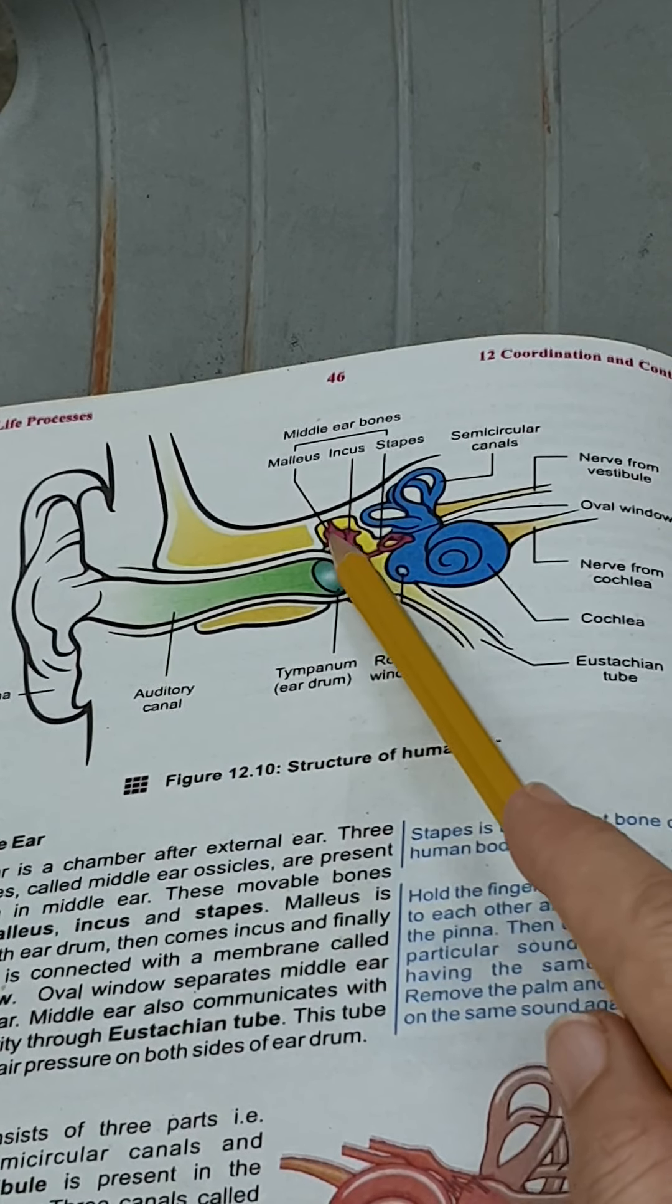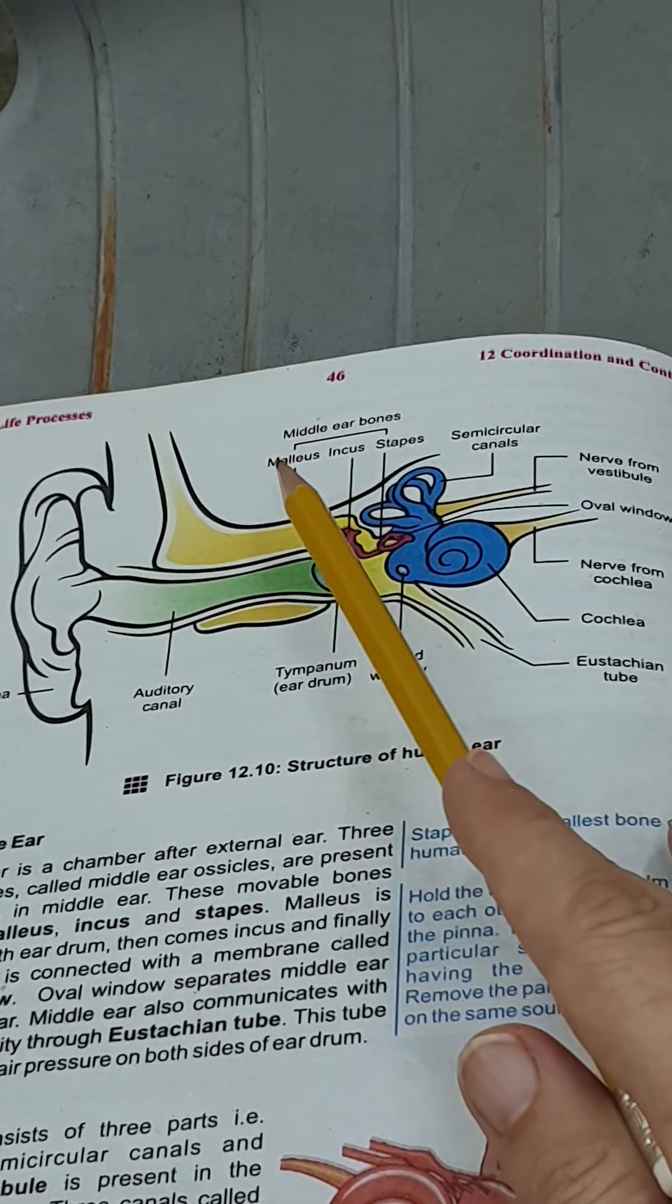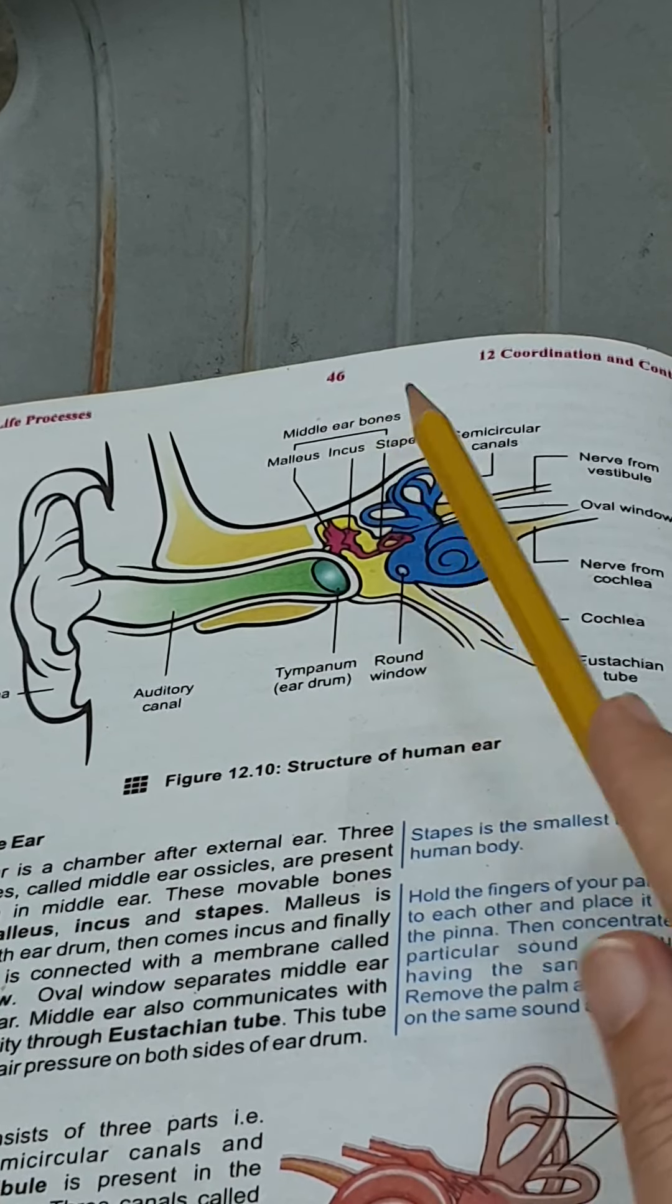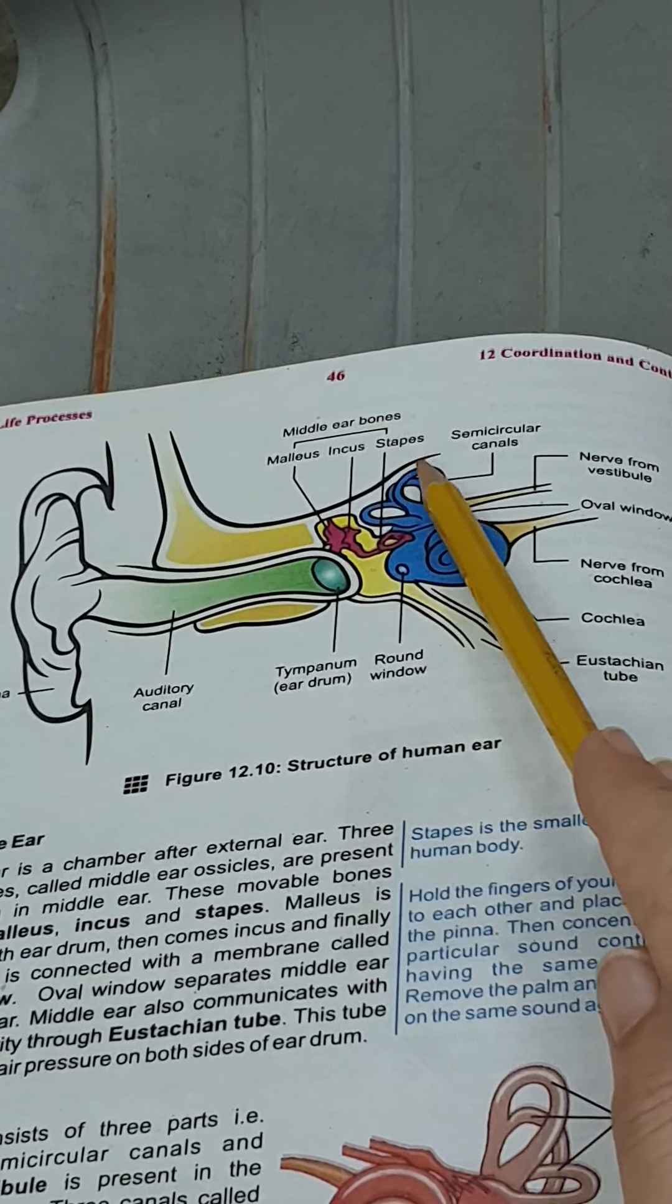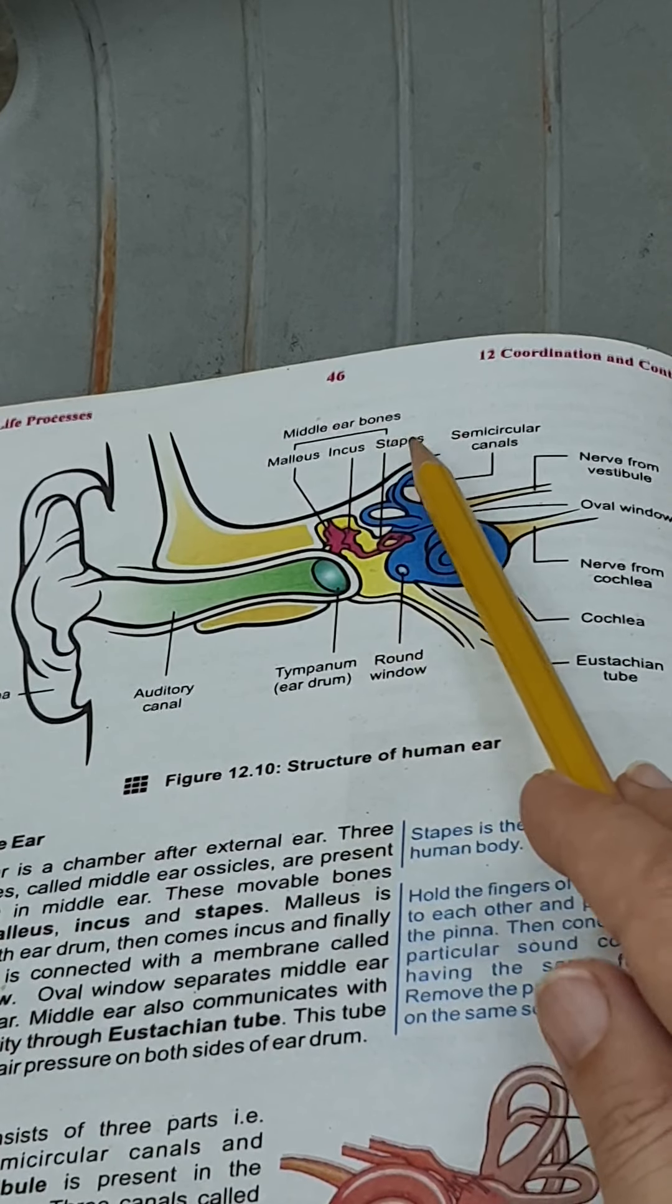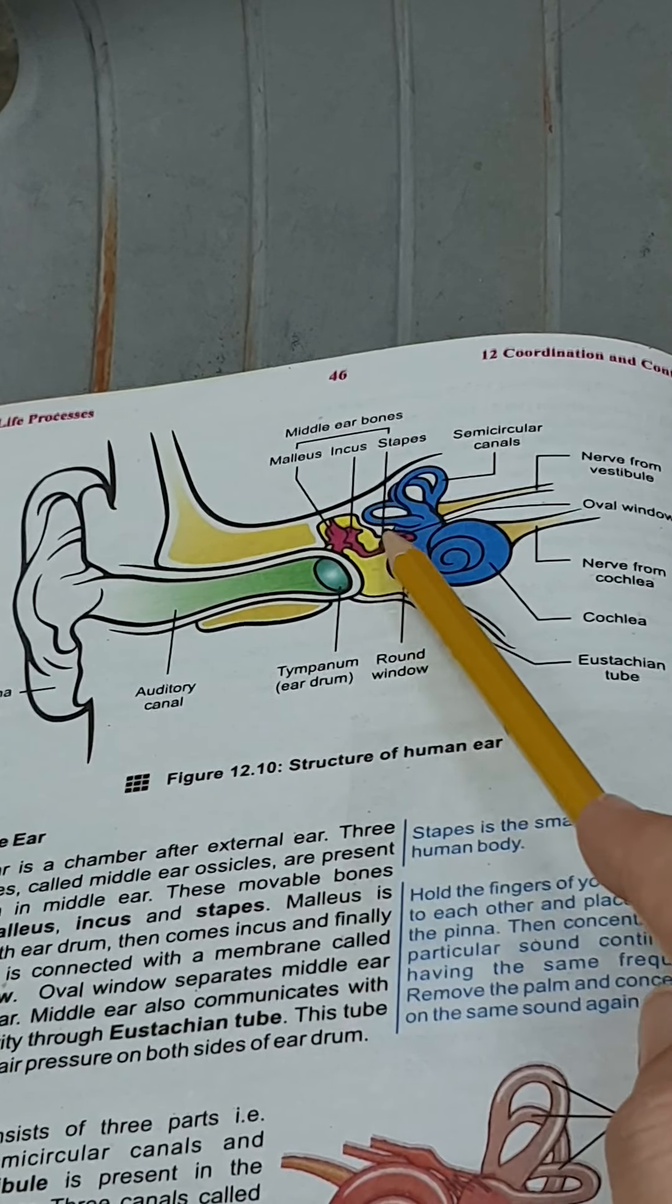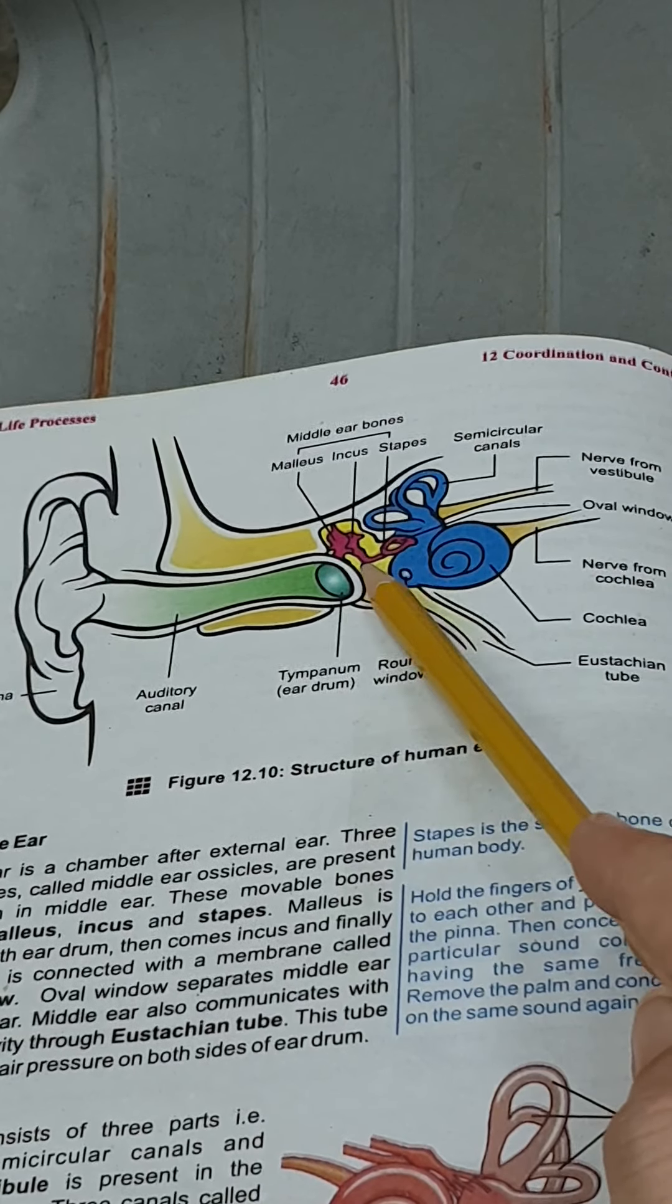The middle ear consists of three bones which are known as middle ear ossicles. These ossicles consist of: malleus, incus, and stapes. These are the three bones known as middle ear ossicles, and stapes is the smallest bone in our body. These are also used for the production and transformation of vibration inside the ear.